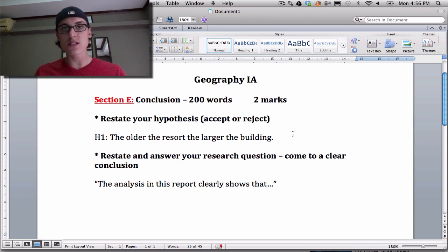Section E is 200 words. It's your conclusion, very clearly and concisely written, and it is only two marks of your total of 30 marks.